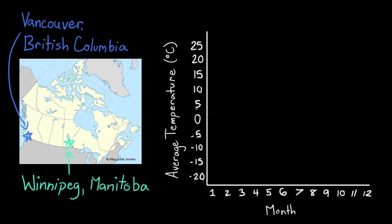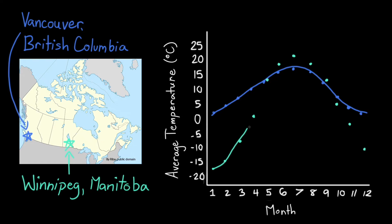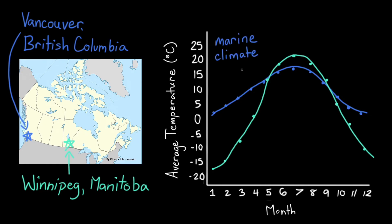This line graph follows the average temperature in Celsius for each city throughout the months of the year. Vancouver starts the year mildly chilly, temperatures rise a bit for a warmer summer, and then slope gradually back down. Overall, the city sees a pretty small range of temperatures throughout the year, because the nearby ocean influences the local climate as it gradually warms and cools. Compared to Vancouver, Winnipeg has a much colder winter and a slightly hotter summer, resulting in a more dramatic range of temperatures throughout the year. We call a climate like Vancouver's a marine climate, and a climate like Winnipeg's a continental climate.